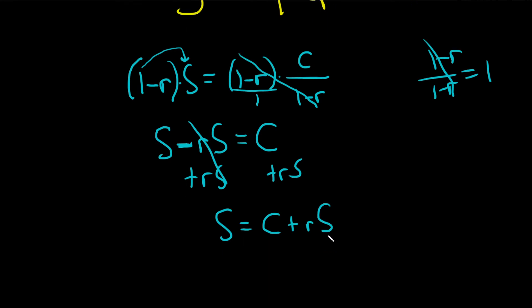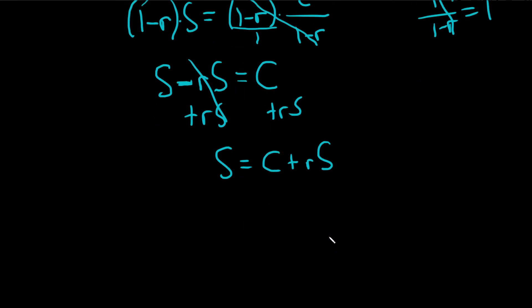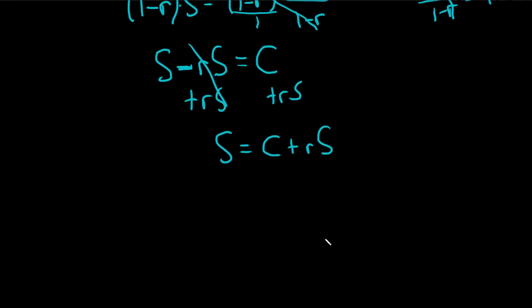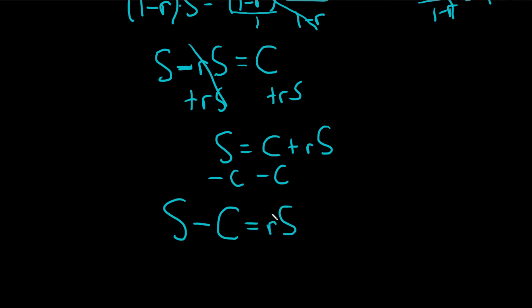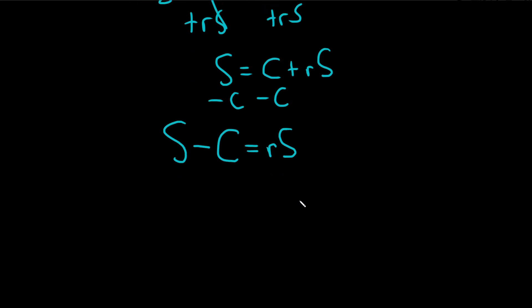Now we're trying to get little r by itself, so we'll subtract c from both sides. So we have s minus c equals rs. We're looking for little r, and it's being multiplied by big s, so we just divide by s.